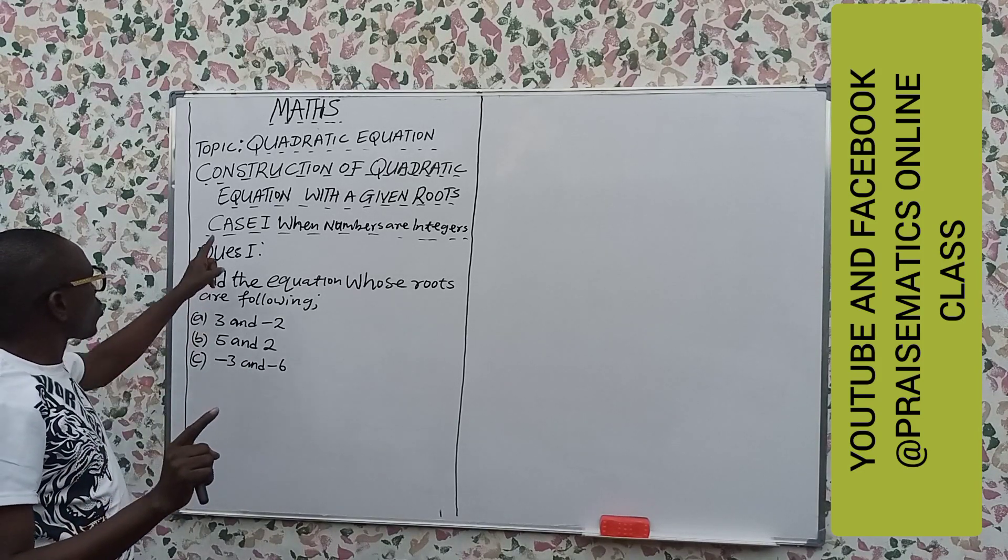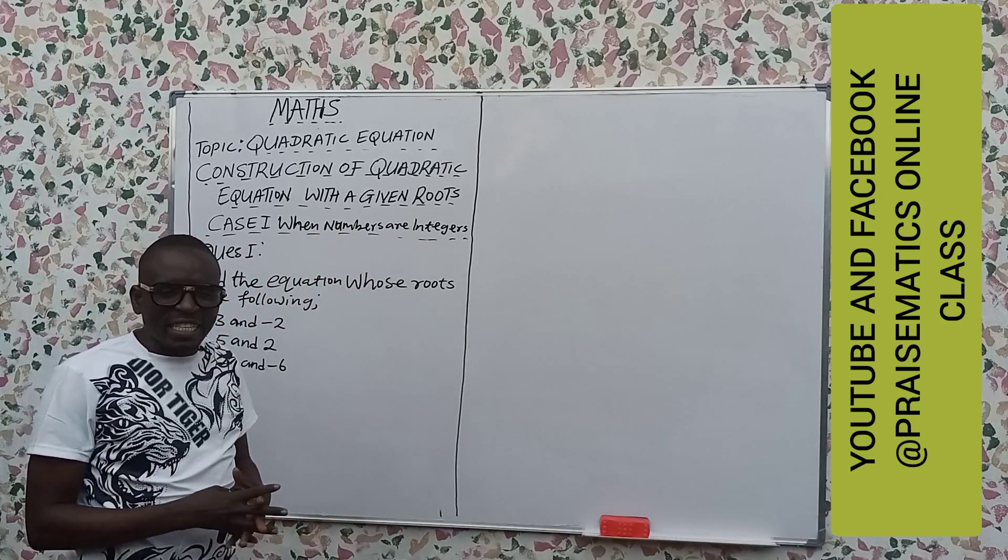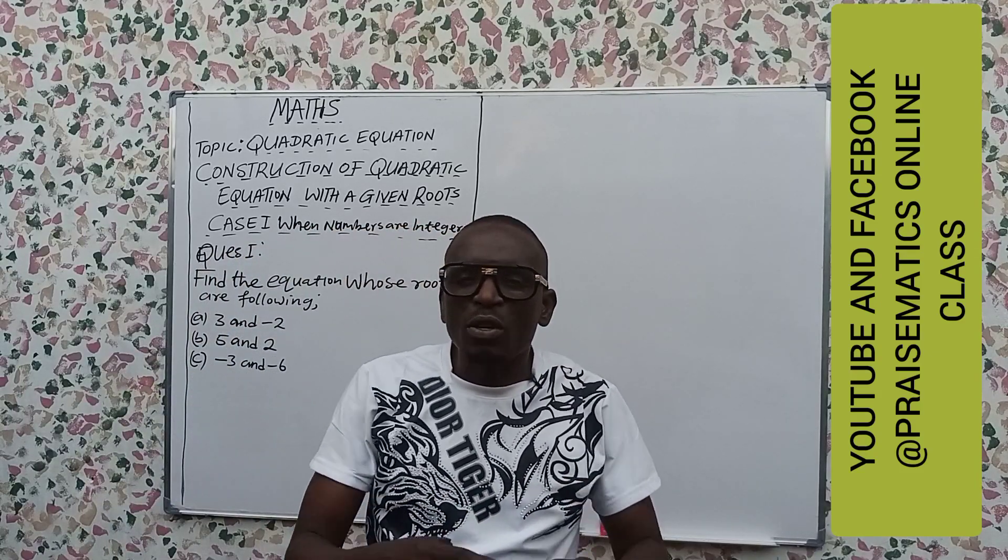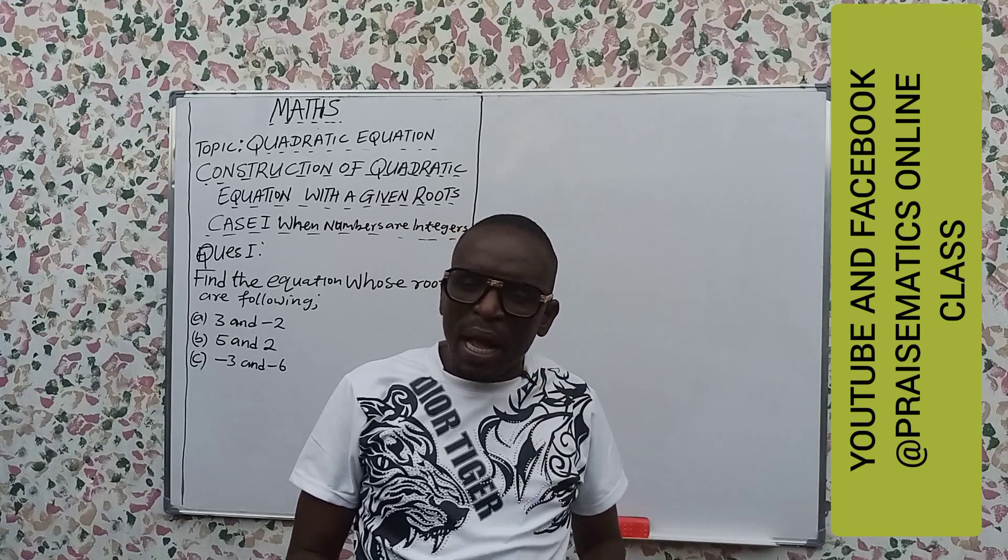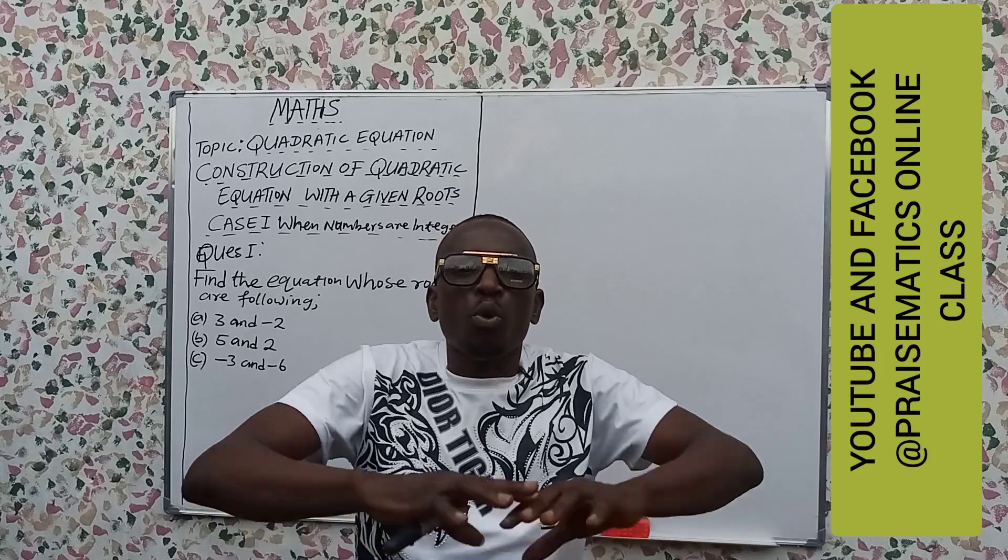But there is a case. Case 1 here is when numbers are integers. And what are integers? Integers are defined as the whole numbers. Those numbers that contain positive numbers, negative numbers, and 0. That is what we call integers, the whole numbers.